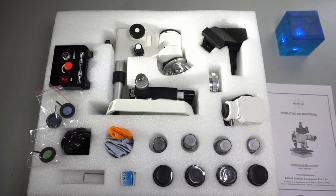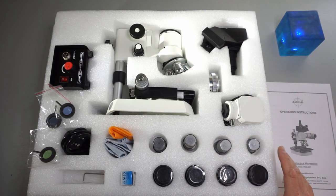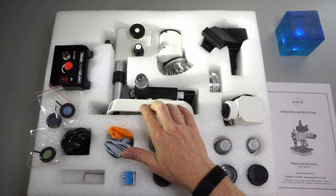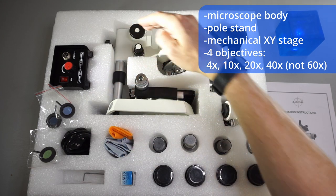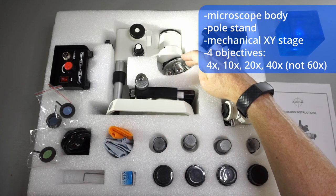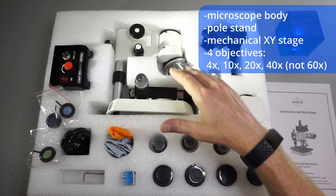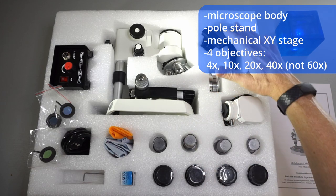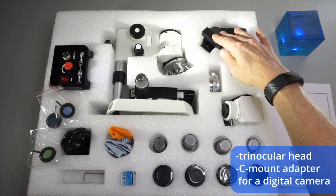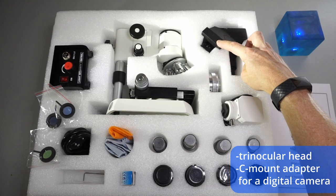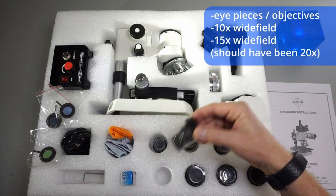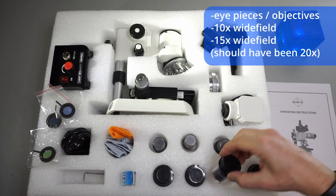I took away the plastic bag so I think it's easier to now look at the content of the packing. This is the microscope body with a pole stand, the mechanical XY stage. It also includes the four objectives: 4 times, 10 times, 40 times and 60 times. Here we have the trinocular head with a C-mount adapter for a digital camera, then we have the eyepieces 10 times and 20 times.